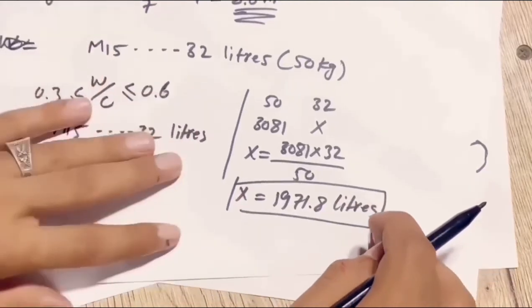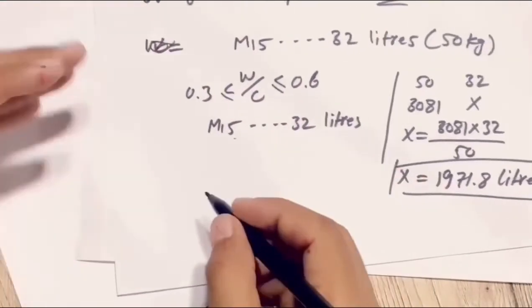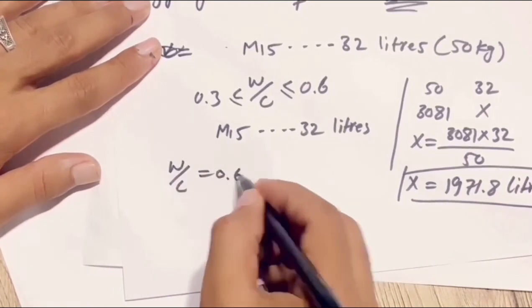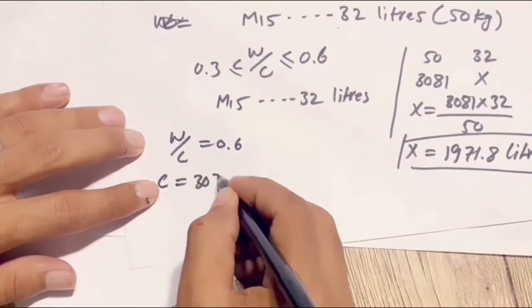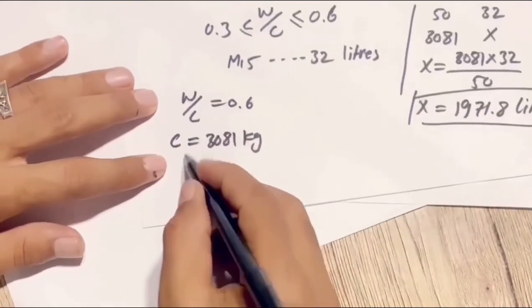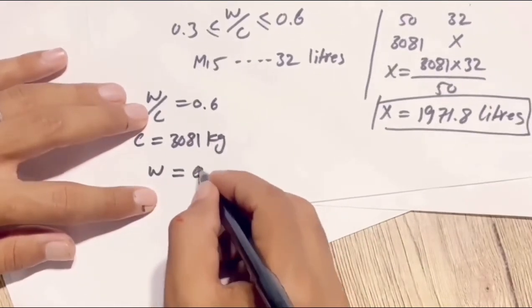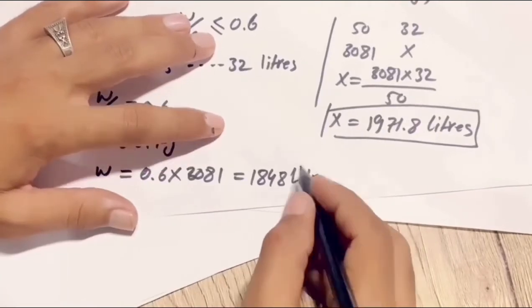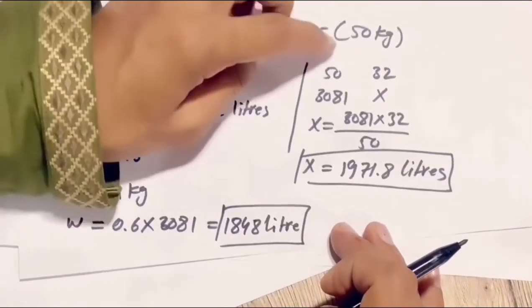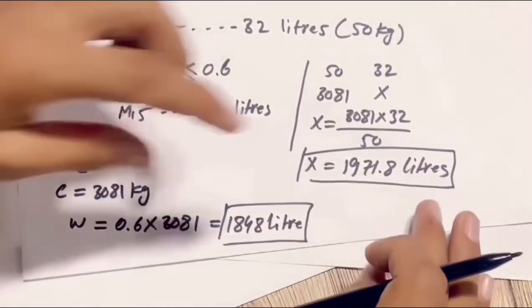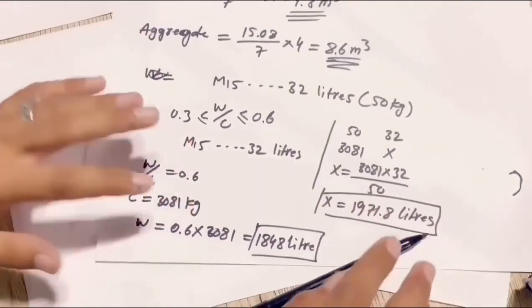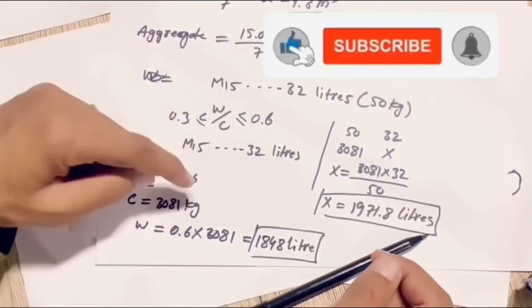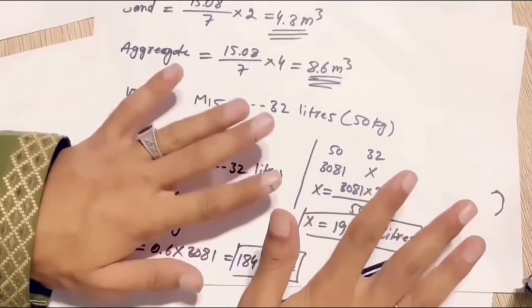If we calculate from the water-cement ratio formula, assuming water-cement ratio = 0.6 and cement weight = 3081 kg: water = 0.6 × 3081 = 1848.6 kg (liters). We can see from both methods we get comparable water quantities. The water-cement ratio should be between 0.3 and 0.6 per construction site standards. This was the PCC calculation for the foundations along with material quantities — cement, sand, aggregate, and water. Thank you very much, see you in the next video.